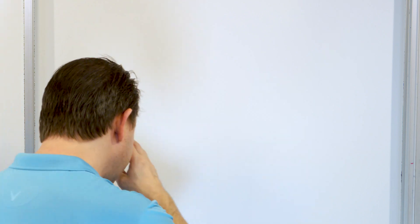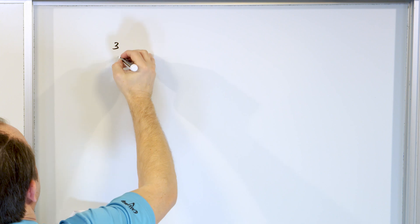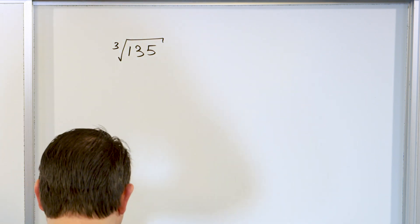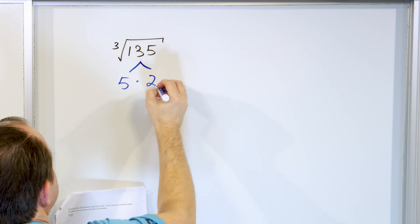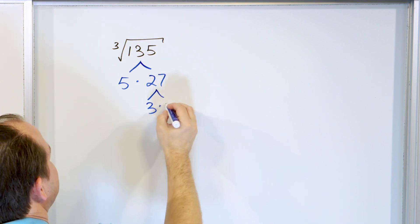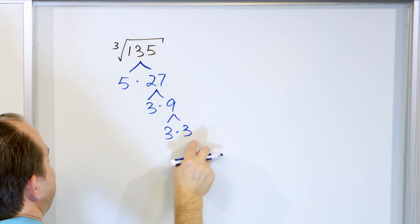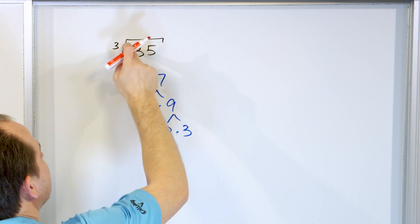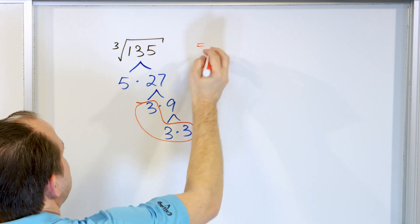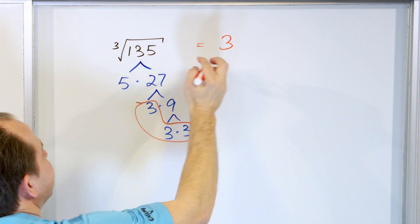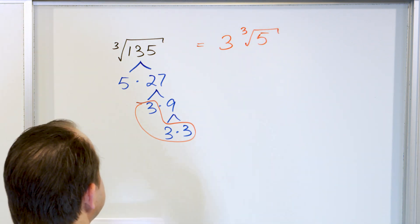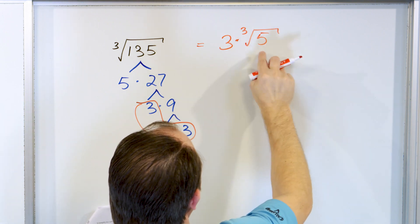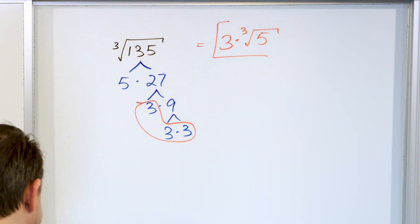Next problem: cube root of 135. I know it's divisible by 5, and 5 times 27 equals 135. For 27, I know 3 times 9 is 27, and 3 times 3 is 9. Now I have prime numbers at the bottom. I'm looking for a cube root, so I need a triplet — which I found: three 3s. The 3 comes out as a single, and the 5 is left behind under the radical. The answer is 3 times the cube root of 5 — not 3 cubed, but 3 times the cube root of 5.